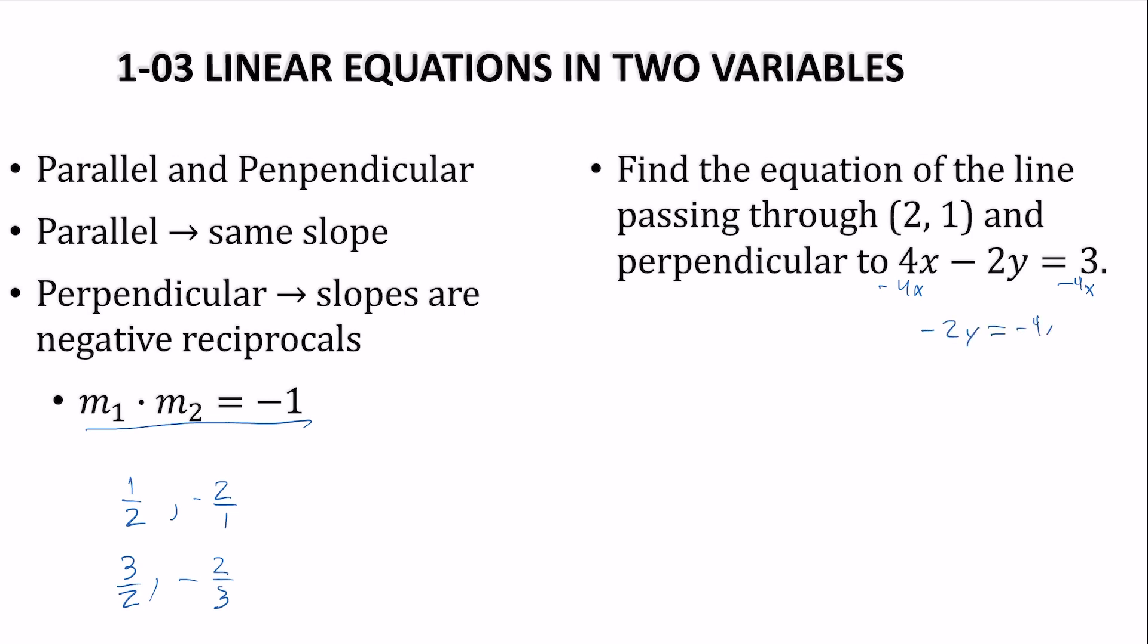So we'll subtract the 4x and divide by negative 2. So that would be negative 4 over negative 2 is 2. So we have y equals 2x minus 3/2. So our slope, the perpendicular slope is 2, so what is the slope we want?